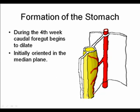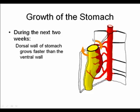Moving toward the region of the foregut that will become the stomach, this region dilates along its posterior surface. You can see the ventral mesentery attaching to the gut tube and the dilation of the posterior region. Over the next two weeks, we see continued enlargement of the posterior region along with rotation: the ventral surface moves to the right, the dorsal surface moves to the left, and the mesenteries shift accordingly.